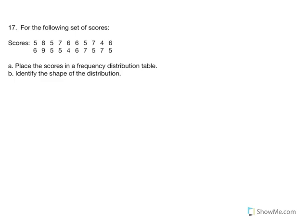Number 17. For the following set of scores, we place the scores in a frequency distribution table, then identify the shape of the distribution. We begin by constructing our frequency table with x values and frequency. To ensure we don't leave out any data, we first identify our sample size — counting all 20 scores. The sum of frequency should equal the sample size of 20.